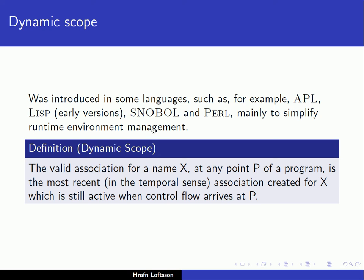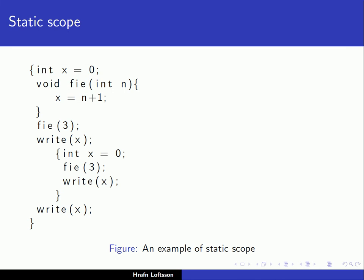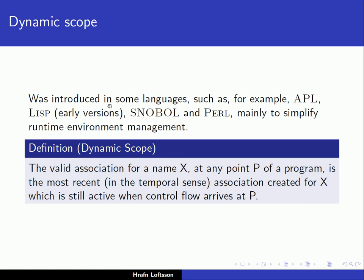This is something we will talk about later in the course when discussing memory management at runtime. We see that there is some overhead associated with keeping track of static scope at runtime — meaning we need to correctly find the correct declaration or instance of a variable. For example, when inside function phi and referring to x which is declared non-locally, how can we find the correct memory location for x at runtime? To simplify this, dynamic scope was introduced.